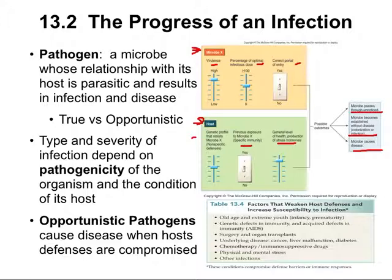Of particular interest is the slider bar on the left, where we consider the genetic profile of the host. For example, a few individuals have a gene that makes them much less likely to be infected by HIV. Basically, this gene produces an inappropriate docking protein, so HIV has a much harder time entering the cells.